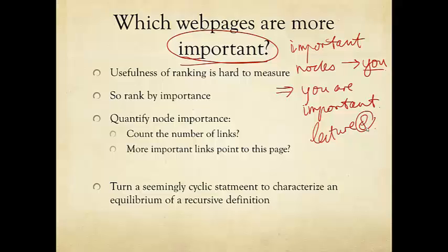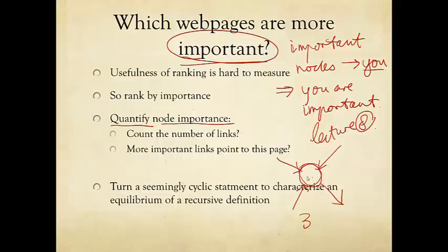Now there are quite a few intuitions you can think about. One is to say, you want to quantify node importance, so maybe just count how many links this node has. Since this is a directed graph where each link is a directed link, we count how many links point into this node — in this case, there are three links pointing into this node. We call this the in-degree. And the out-degree is one, because there's just one link pointing out of this node. The total degree of this node is four. This is a simple intuition, and as we will see, it's sort of getting on the right track, but it lacks many elements for it to be a useful metric.